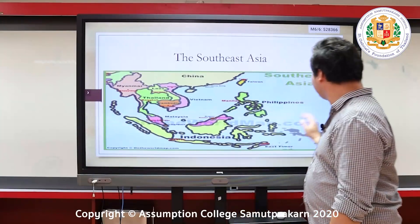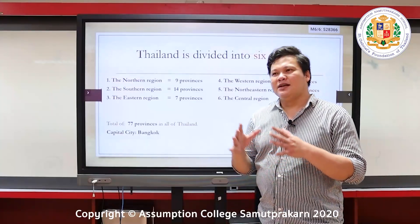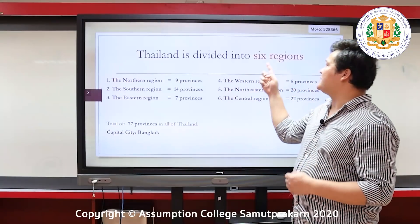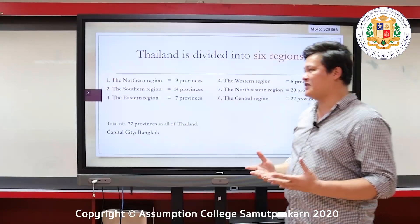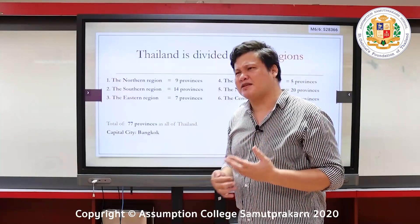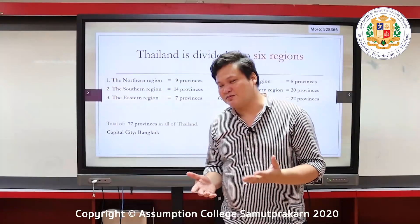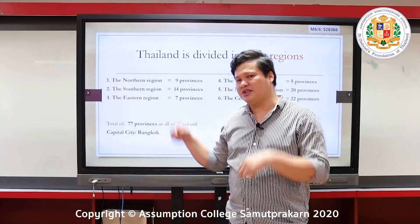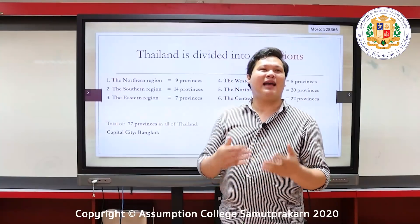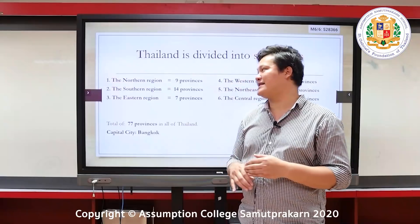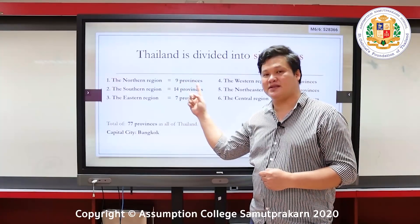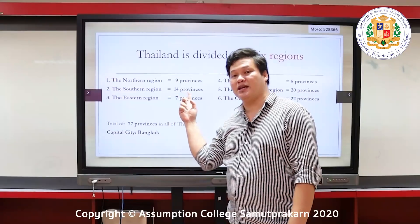Thailand is also divided into six different regions. The northern region, up north, has famous provinces like Chiang Mai, Chiang Rai, and Mae Hong Son. The southern region, going south, includes Phuket, Yala, and Narathiwat. The northern region has about nine provinces and the southern region has 14 provinces.